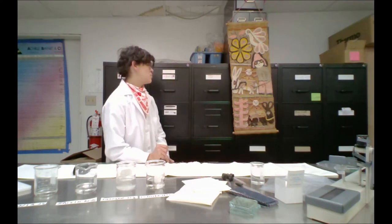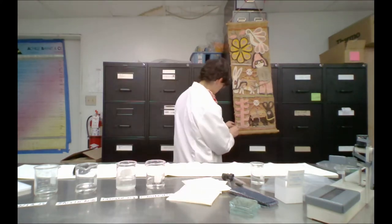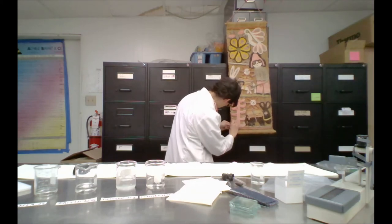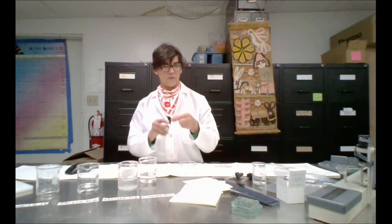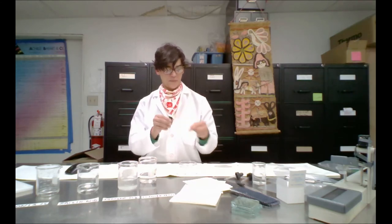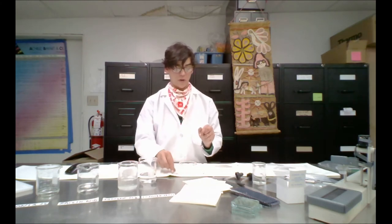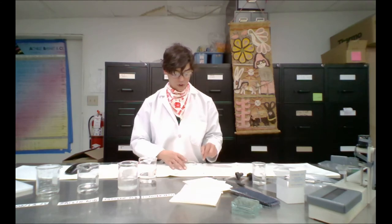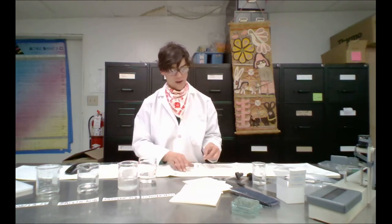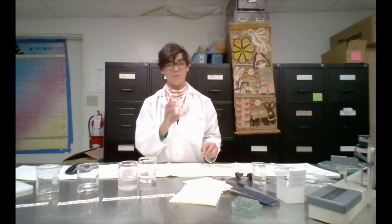So first we're going to take a small thread from the artifact, wet out a small thread sample taken from the textile. So we have our small thread samples here that I've removed from the textile, and now we're going to wet them out. I do have a petri dish to wet them out in.